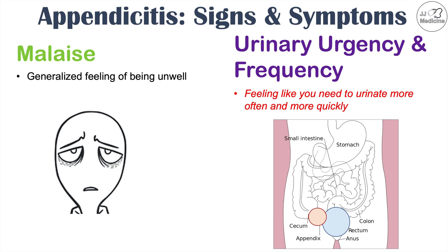This is similar to the mechanism described in diverticulitis. These urinary symptoms are similar to what might be seen in a urinary tract infection, but they won't be mistaken for one because of all the other symptoms — especially that characteristic pattern of pain location, sensation, and migration. That is very key with regards to appendicitis. If you want more information, please check out the in-depth overview of appendicitis, and please like and subscribe for more lessons. Thanks for watching — hope to see you next time.